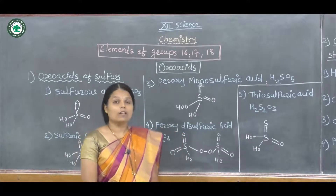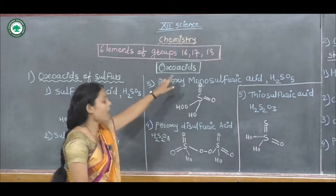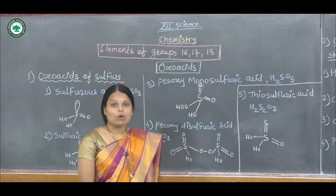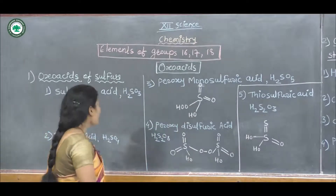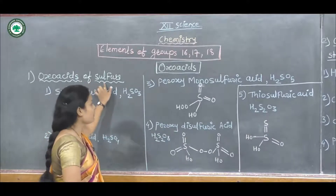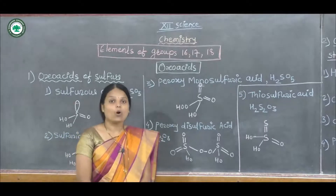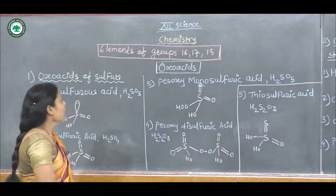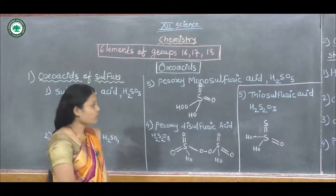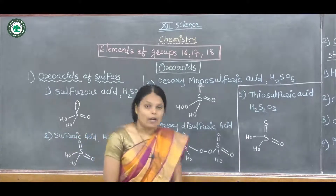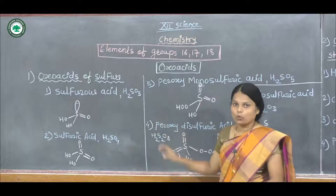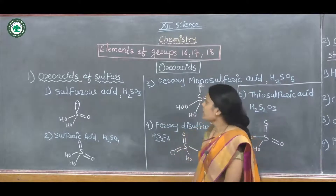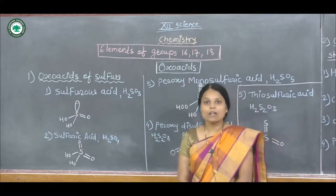Today we are going to start a new topic: oxoacids. There are two types of oxoacids. The first one is the oxoacids of sulfur and the second one is the oxoacids of halogen. In the oxoacids of sulfur, we will discuss the structures, names, and formulas. The sulfur forms a number of oxoacids — there are five oxoacids formed by sulfur.